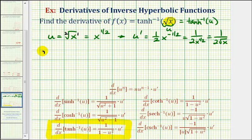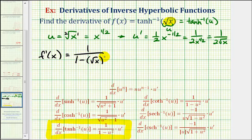Now let's find our derivative. F prime of x is equal to the derivative of inverse hyperbolic tangent of u, which is one divided by the quantity one minus u squared, where u is equal to the square root of x, times u prime, which is one divided by two square root x. Notice how we applied the chain rule, where the first factor is the derivative of the outer function evaluated at the inner function, and the second factor is the derivative of the inner function.